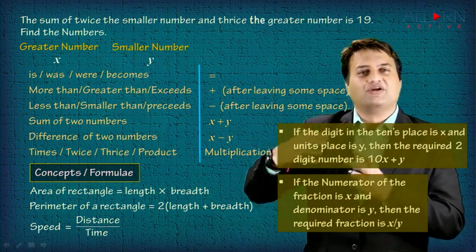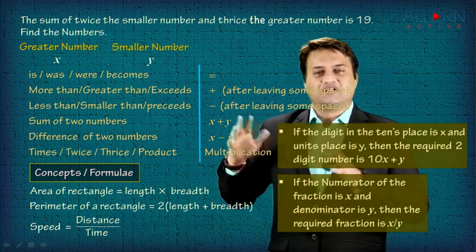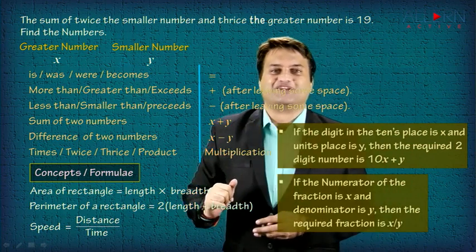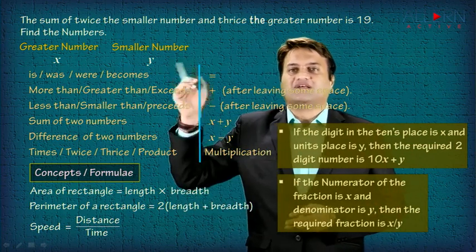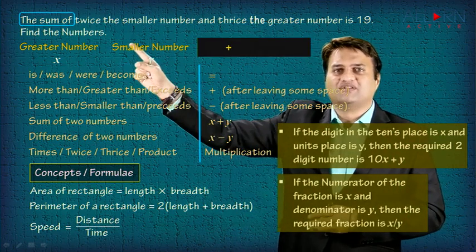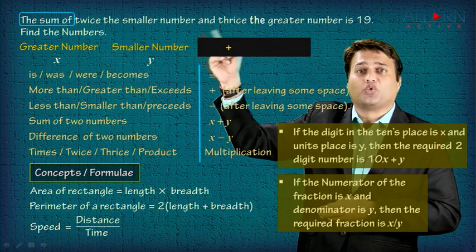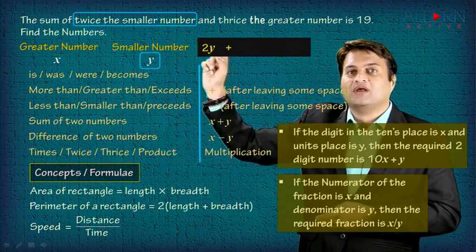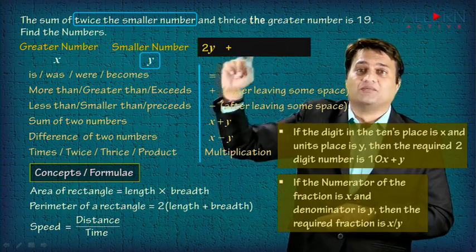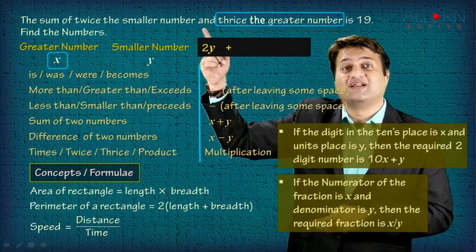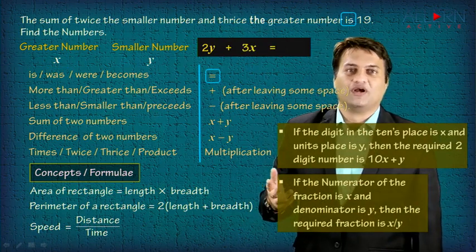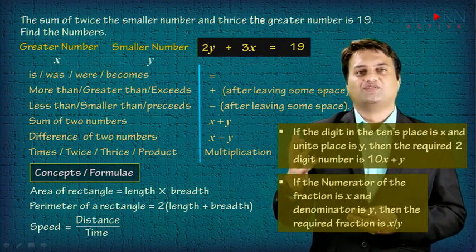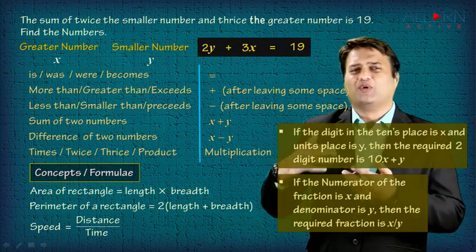So these are certain tips for forming the equation. Now let us form the equation for the example and see how to apply these rules — how to convert the English statement into a mathematical equation. What is given: 'the sum of' — sum means plus. 'Twice the smaller number' — that is 2 into y, which is 2y. 'Thrice the greater number' — greater number is x, so that is 3x. 'Is equal to 19.' So 2y plus 3x equals 19. Writing in alphabetical order: 3x plus 2y equals 19. Equation formation is as simple as that.